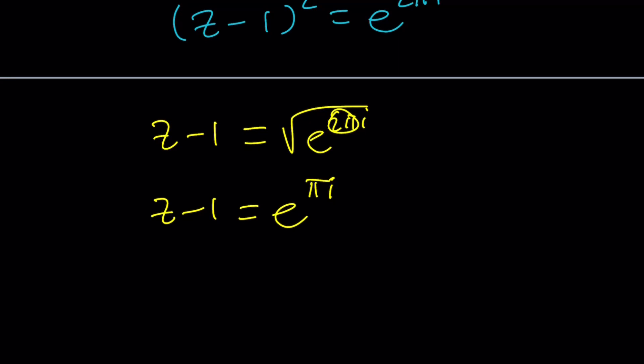And then from here, e^(πi) equals negative 1. And that basically gives us, this is supposed to be an i, and that gives us z = -1 + i.